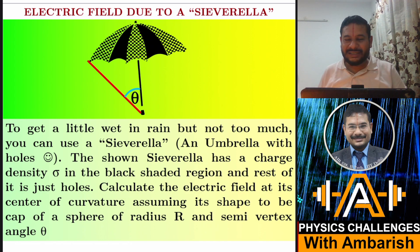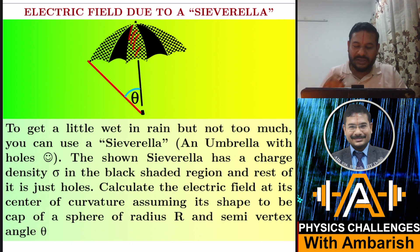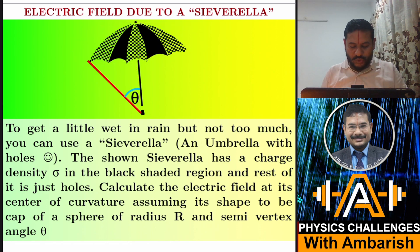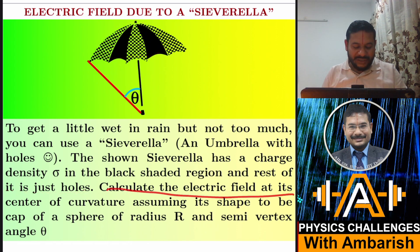In this region there are black squares and holes alternating — equal numbers of black squares and holes. So the civrella has charge density sigma in the black shaded region and the rest is just holes. Calculate the electric field at its center of curvature. If you model this as a cap of a sphere, there will be a center of curvature where you need to calculate the electric field.